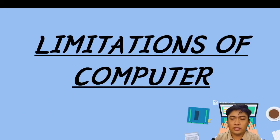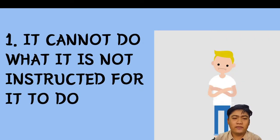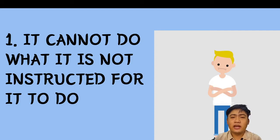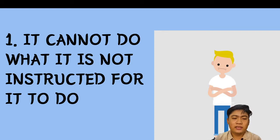Let's proceed to the limitations of computers. Humans believe that no matter how powerful computers are, they still have limitations. The first limitation is that a computer cannot do what it is not instructed to do. A computer is dependent on data and instructions, and the operations it performs are based on the instructions given by the user.